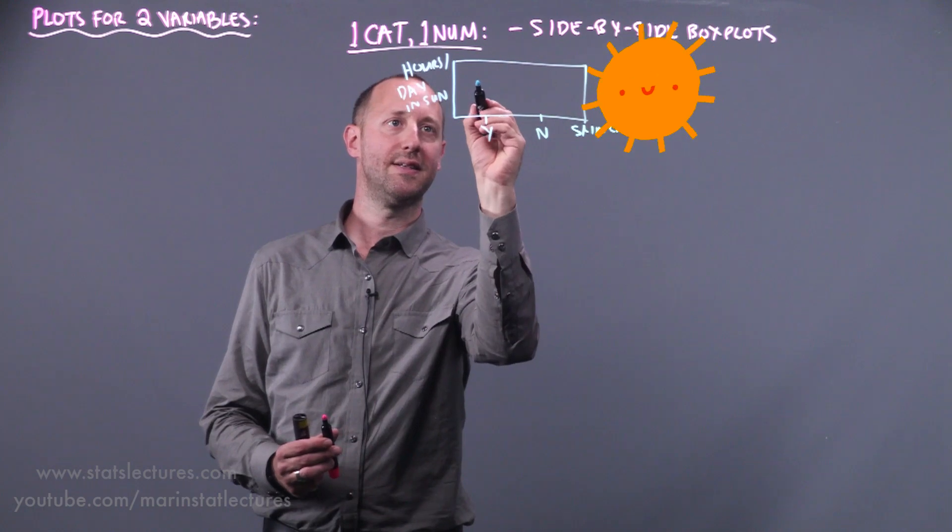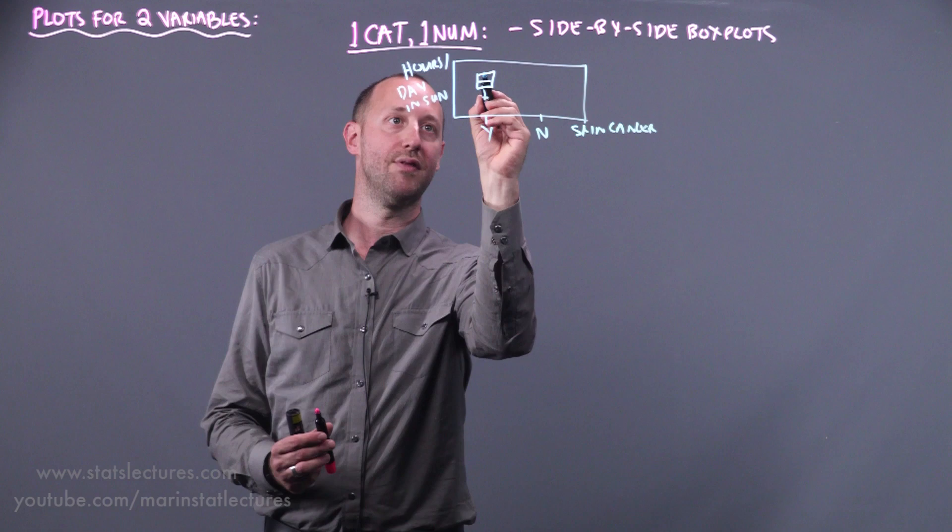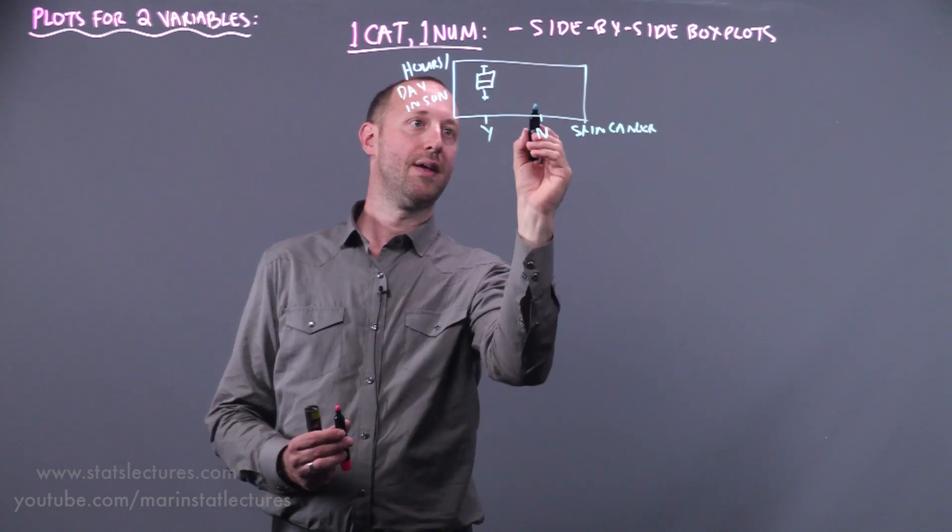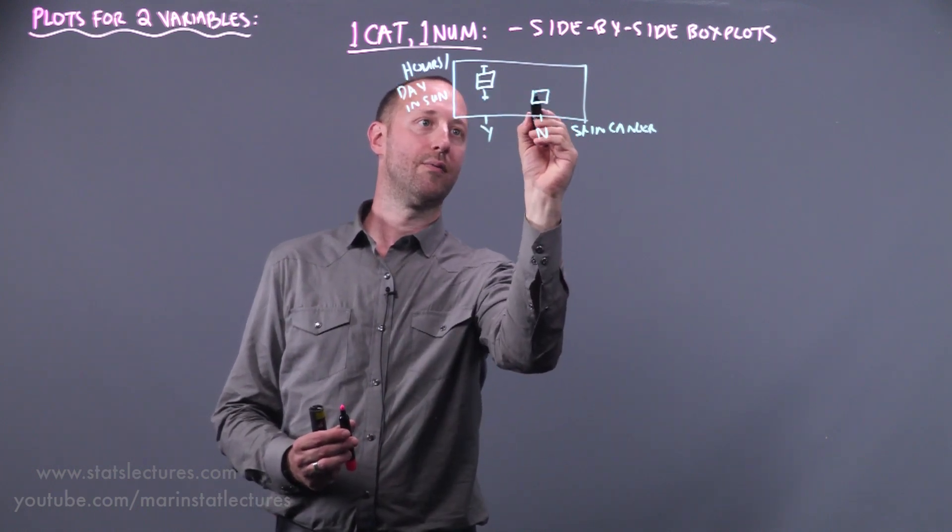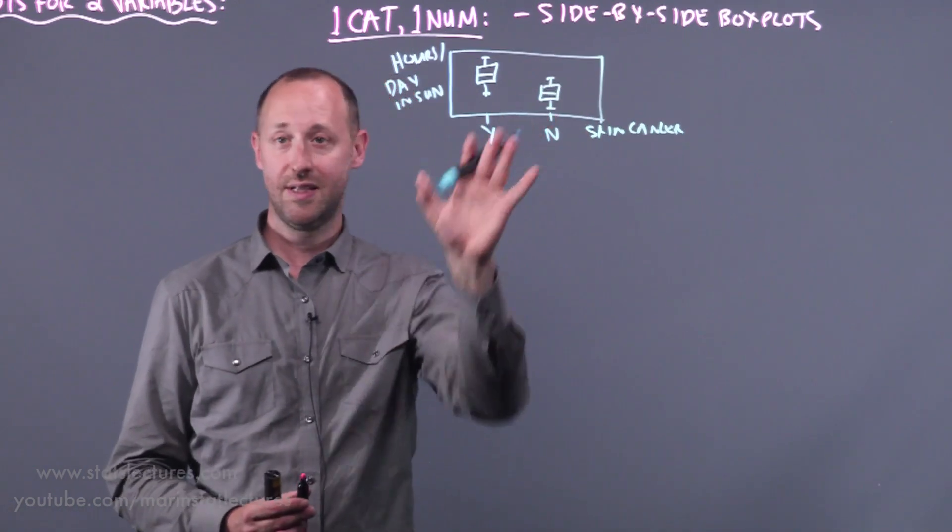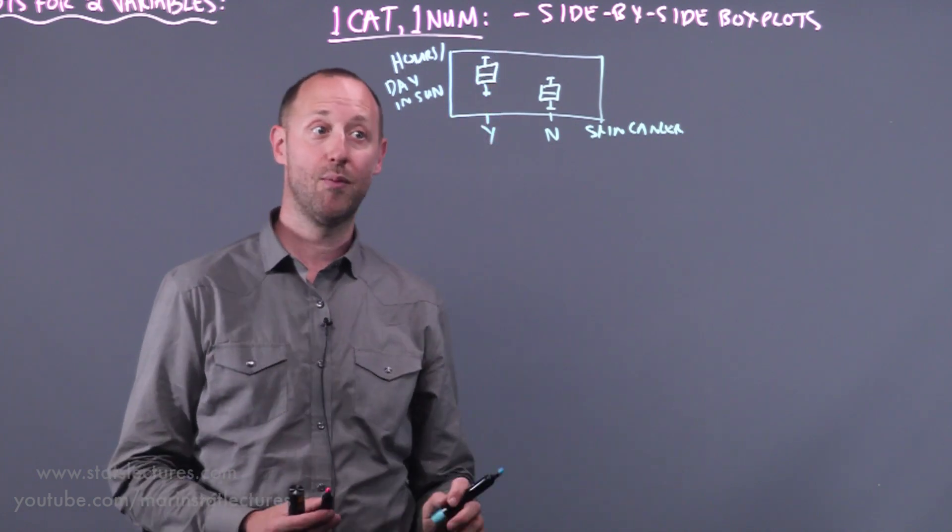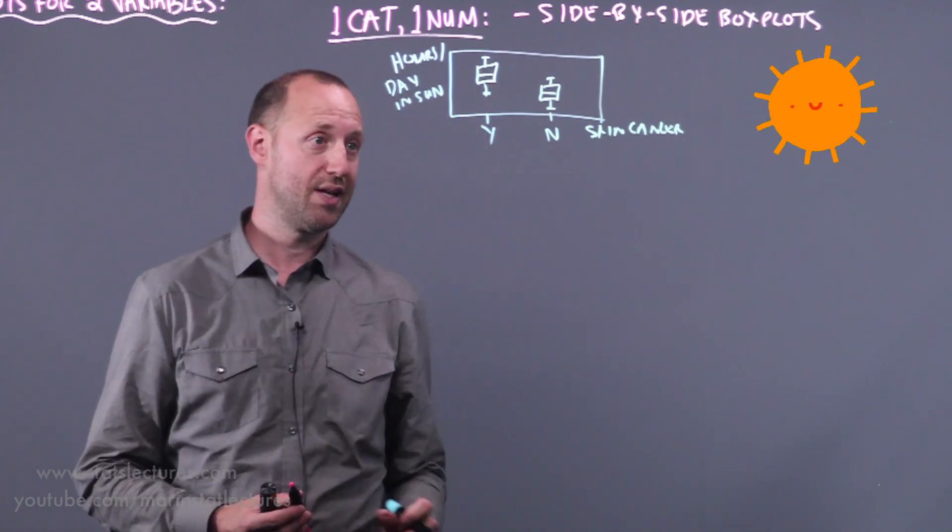And what we'd likely see is for those with skin cancer, here's the distribution of the number of hours in the sun, and for those without we'd likely see that distribution a little bit lower. So here we can see through this plot there is an association. Those who have skin cancer tend to on average be spending more hours in the sun than those that don't.